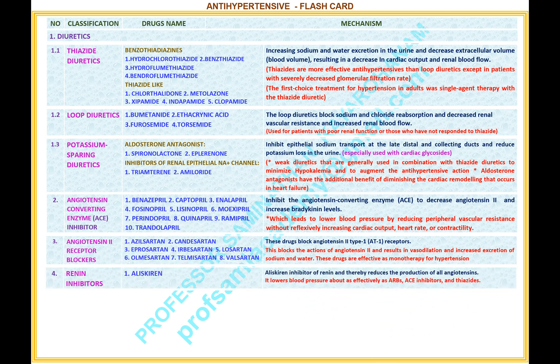Number 4: Renin inhibitors. Drug: 1. Aliskiren. Mechanism: Aliskiren is an inhibitor of renin and thereby reduces the production of all angiotensins. It lowers blood pressure about as effectively as ACE inhibitors, angiotensin 2 receptor blockers, and thiazides.